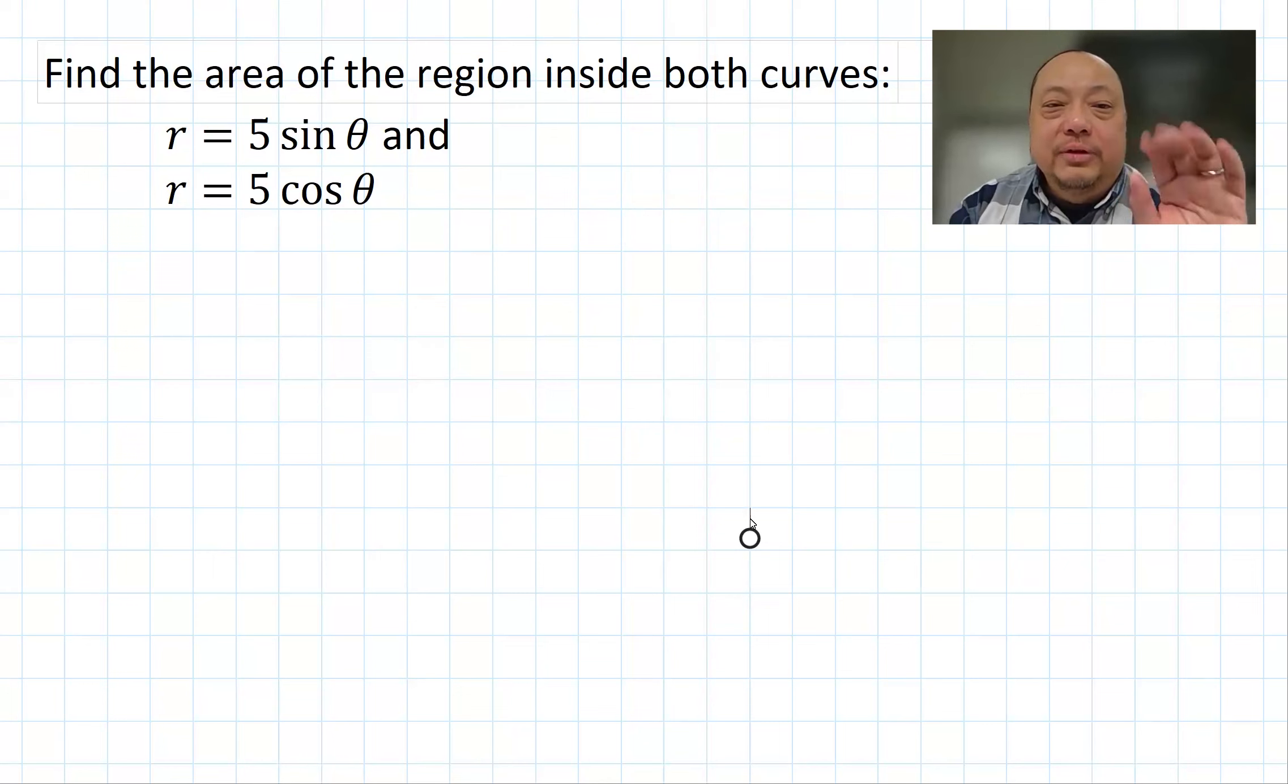The question says, find the area of the region inside both curves, the region that's the overlap of these two curves: r equals 5 sine theta and r equals 5 cosine theta.